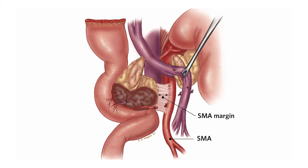Access to and resection of all the soft tissue adjacent to the superior mesenteric artery can be technically challenging. For these reasons, the superior mesenteric artery margin has historically been the margin most frequently involved by cancer following pancreatoduodenectomy. In this video, we will illustrate techniques that may be used to conduct a complete dissection along the right lateral aspect of the superior mesenteric artery so as to maximize the likelihood of a margin-negative surgical resection.